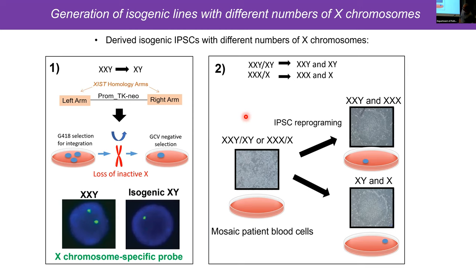For example, one individual had a mosaic population of XXY and XY cells — you can clone them out and get individual cell lines with different genotypes from the same individual, again making isogenic cells. We also had individuals with XXX and XO, and we cloned those out as well to make lines with different sex chromosomes.